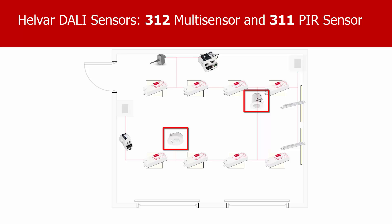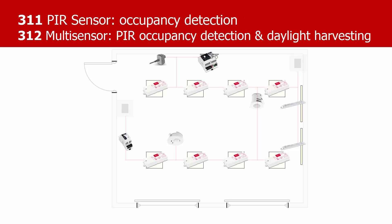Mounted in the ceiling panels, the sensors detect if someone is in the room or not, and can also detect the light level. The signals from the sensors can be used to control the lighting — for example, to switch the lights on when someone comes in, turn them off when nobody has been in the room for some time, or to adjust the lighting to compensate for sunlight coming in through the windows.